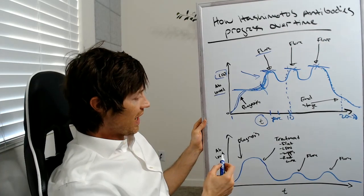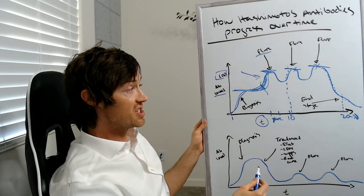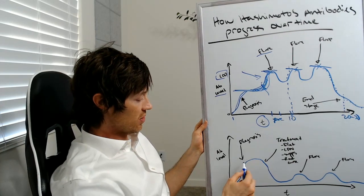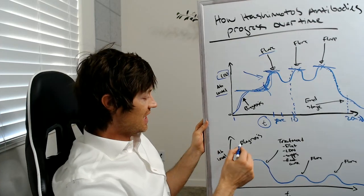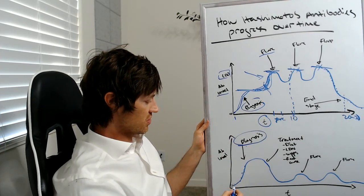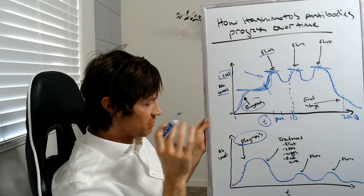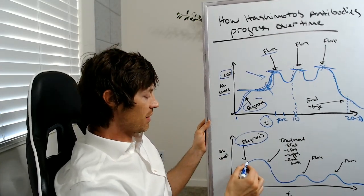So let's compare that to somebody who is actively trying to treat their Hashimoto's. Let's see what that looks like. So we have here the same exact graph. This blue line represents the antibody levels again, but you can see a huge difference here. So in the very beginning, we have the same thing happens to both people. They originally get diagnosed with the disease, or not even necessarily diagnosis, but the inciting event of the disease. They know that something's wrong and the antibody levels start to peak.